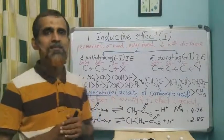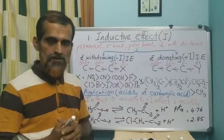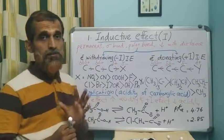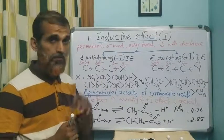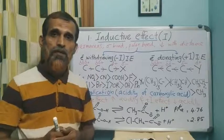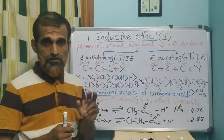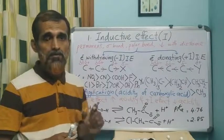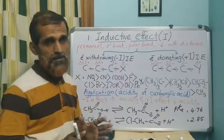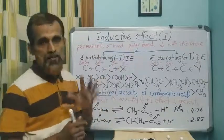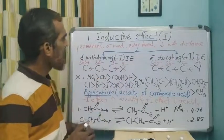Today we discuss the first electron displacement effect mentioned in the previous class. There are four different types of electron displacement effects: inductive effect, resonance, mesomeric effect, hyperconjugation, and electromeric effect. In this class we discuss the inductive effect, abbreviated as the I effect.